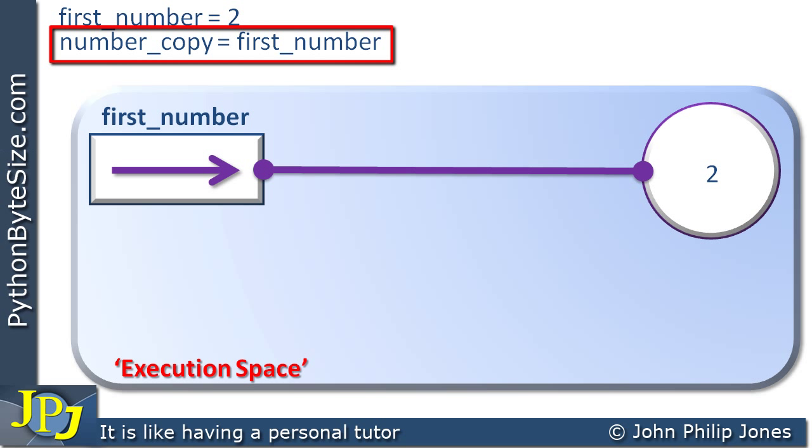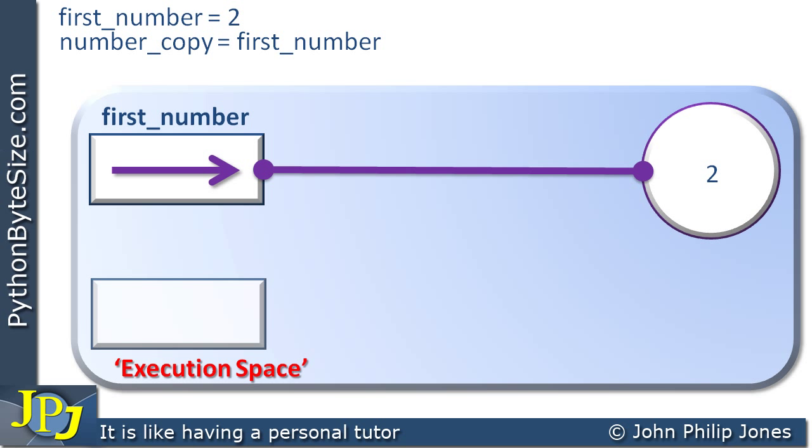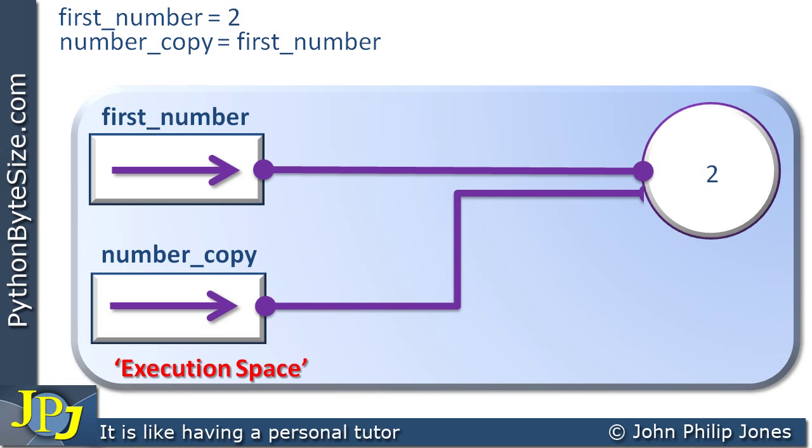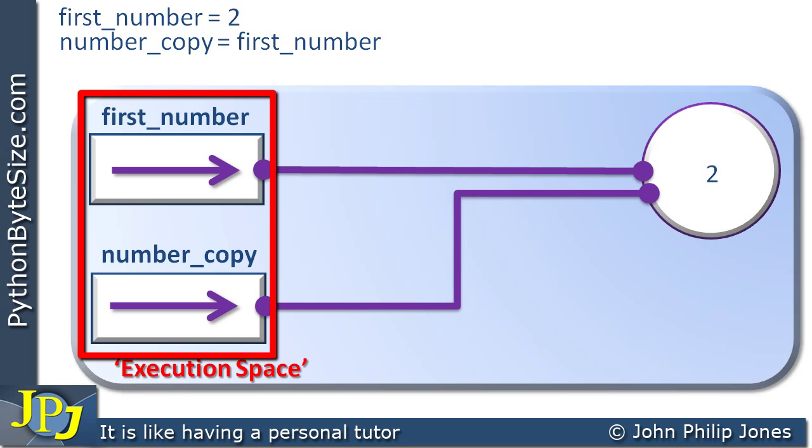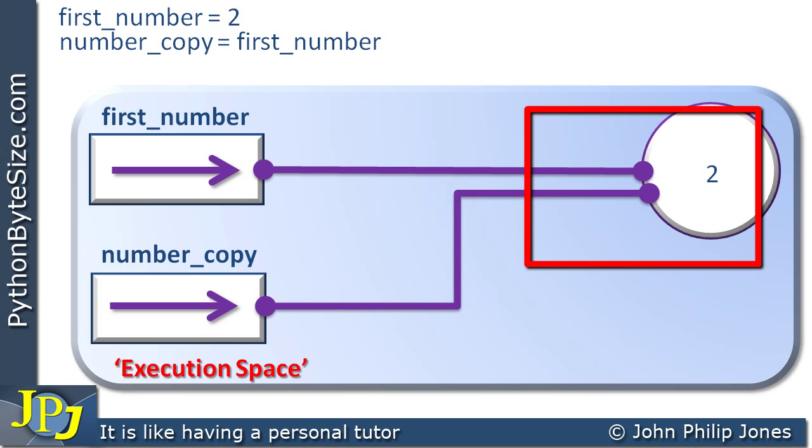This will result in another object reference being created, which is shown here, and it is given the name number_copy. Because it's been assigned first_number, what it will be assigned with is the address that's stored in first_number - in other words, the object reference, the arrow as I'm representing it here. So the arrow is copied to the object reference number_copy. This means that this will now be bound to the object that contains the 2. We can see quite clearly that these two object references, first_number and number_copy, are linked, are bound to the object that contains 2. They both have access to this number 2 stored in this integer object.